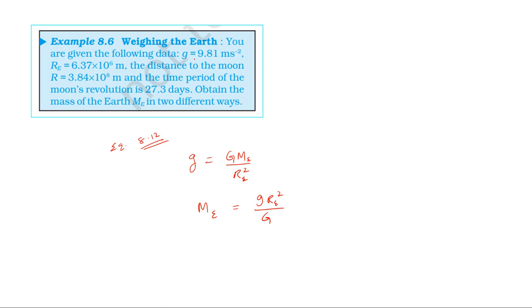The small g is 9.81. Radius of the earth is 6.37 × 10^6 meters, so 6.37 × 10^6 all squared. Divide by G, where capital G is the universal gravitation constant with a value of 6.67 × 10^-11. This gives the value of 5.97 × 10^24 kilograms. This is the mass of the earth.